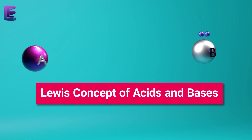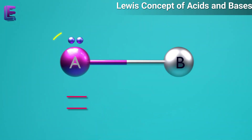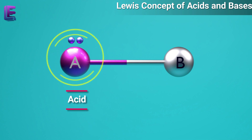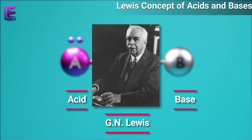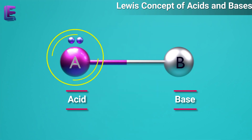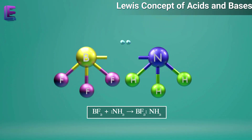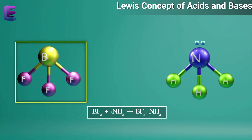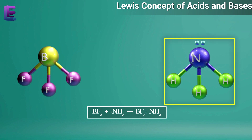Lewis's concept of acids and bases: a chemical that accepts a pair of electrons is an acid, while a chemical that donates a pair of electrons is called a base. This was postulated by Lewis in 1923. Based on Lewis's concept, not all acids contain protons. For example, BF3 plus NH3 gives rise to BF3·NH3. BF3 doesn't contain a proton; despite this, it receives the lone electron pair from NH3 and performs this action.